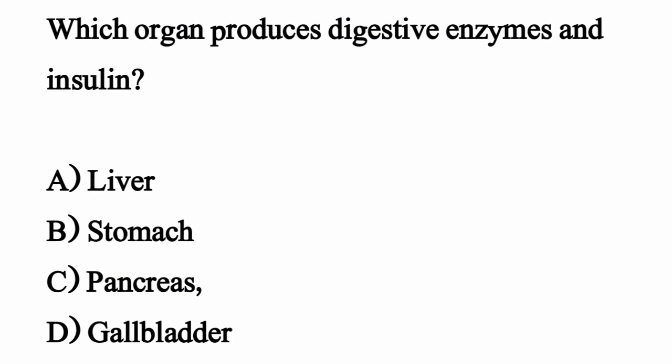Which organ produces digestive enzymes and insulin? The correct option is option C: Pancreas.